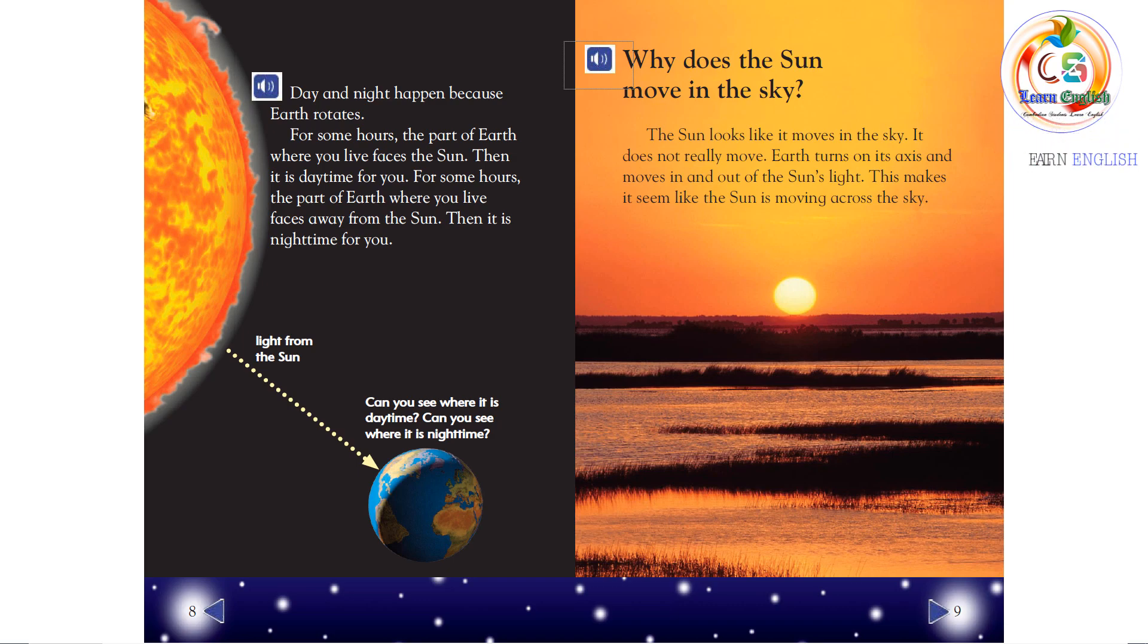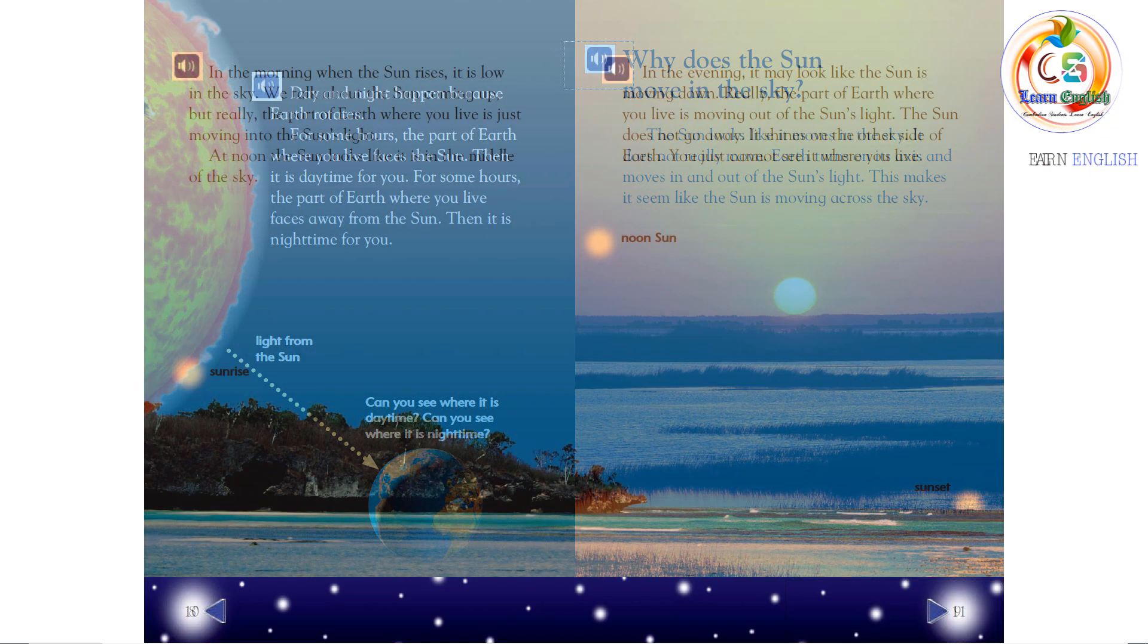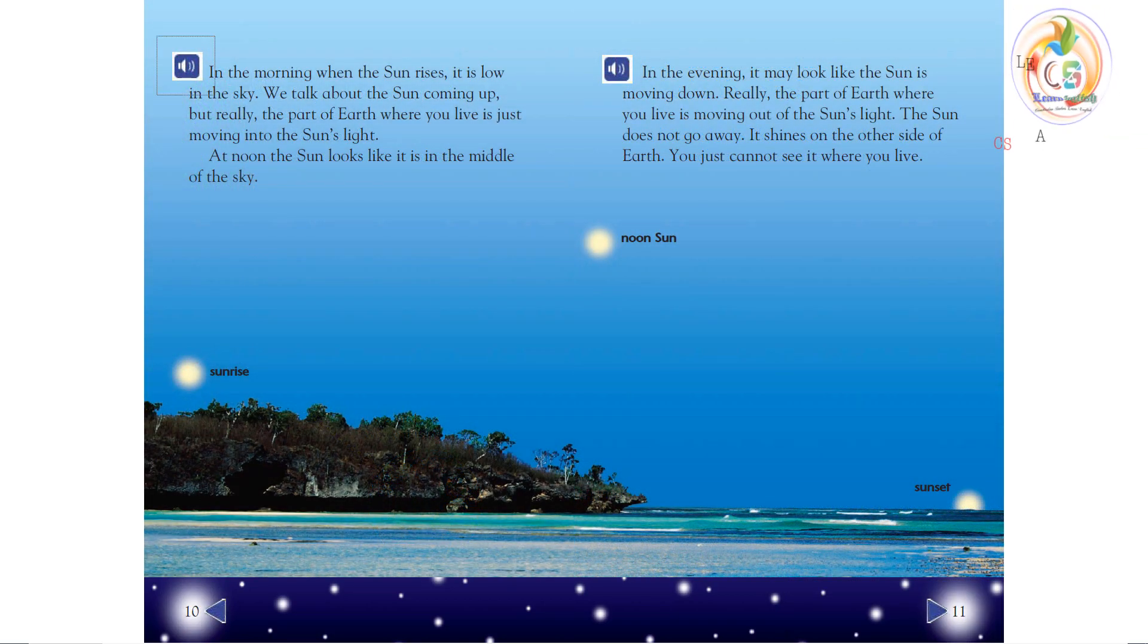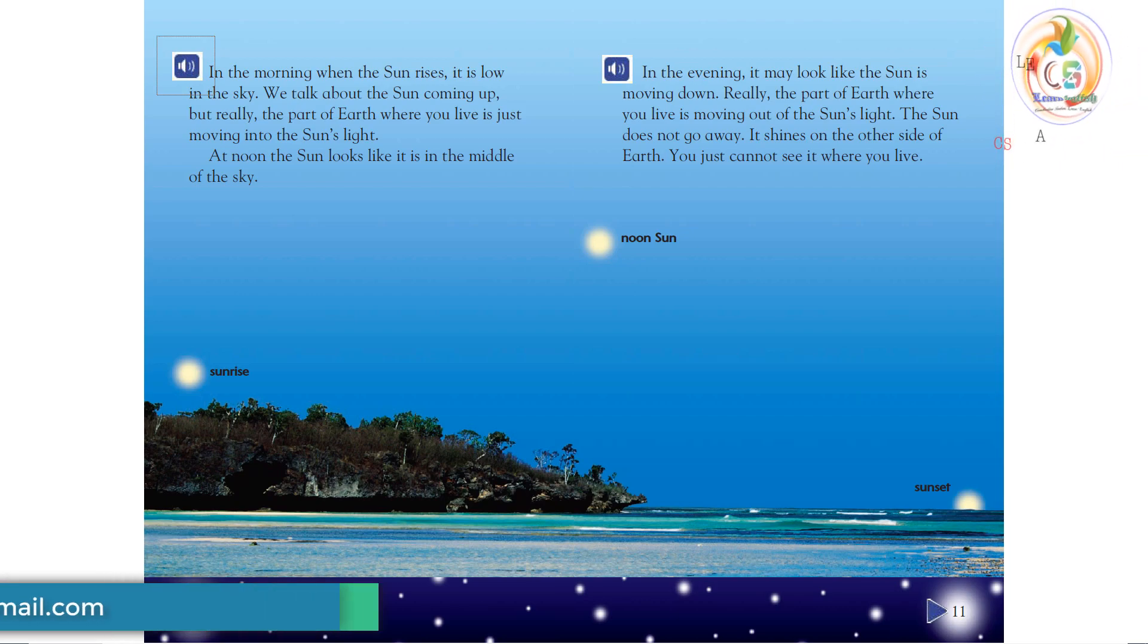Why does the Sun move in the sky? The Sun looks like it moves in the sky. It does not really move. Earth turns on its axis and moves in and out of the Sun's light. This makes it seem like the Sun is moving across the sky. In the morning, when the Sun rises, it is low in the sky. We talk about the Sun coming up. But really, the part of Earth where you live is just moving into the Sun's light.